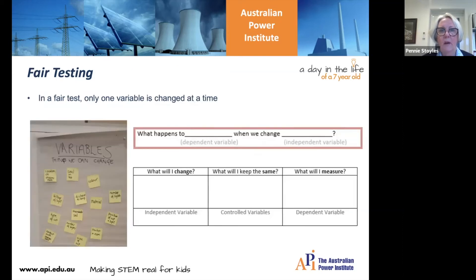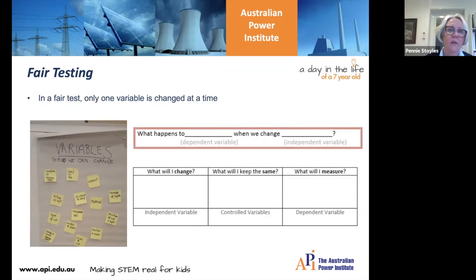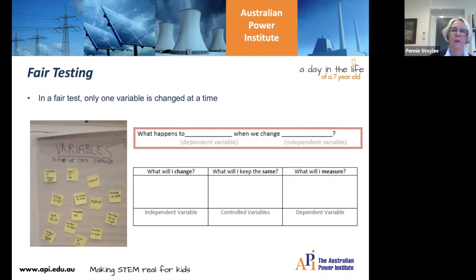The next slide talks about fair testing. When students are designing their own investigations they need to change one thing at a time to see what effect that has. It's getting them to think about what they'll change, what they'll keep the same, and what they're actually going to measure.